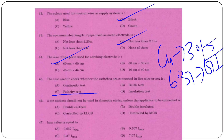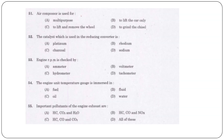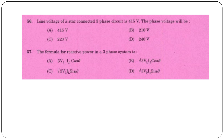The test used to check whether switches are connected in the live wire is the polarity test. 2-pin sockets should be used in domestic wiring only if the appliance connected is double insulated. IRMS = 0.707 × IMAX. Form factor of a sinusoidal wave is 1.11. Unit of inductive reactance is ohm. Phase difference between any two adjacent phases in a three-phase system is 120°. Air compressor is used for multi-purpose applications.